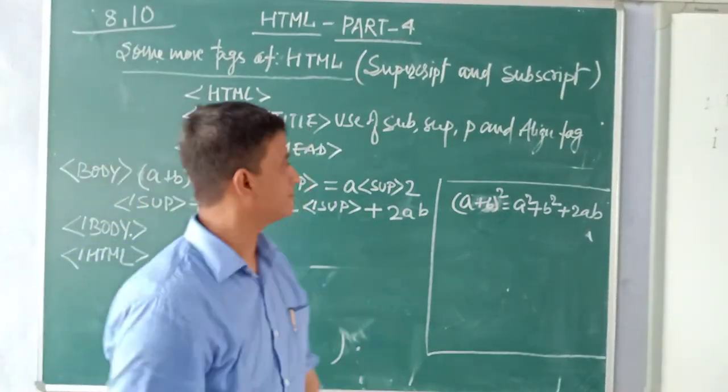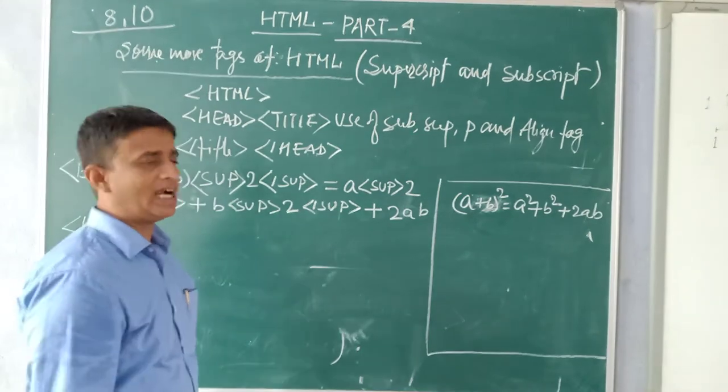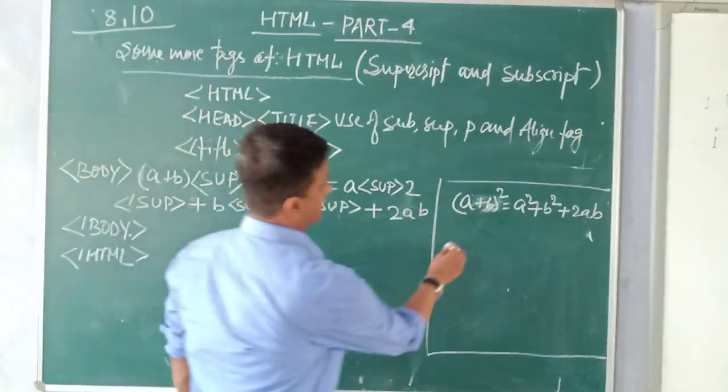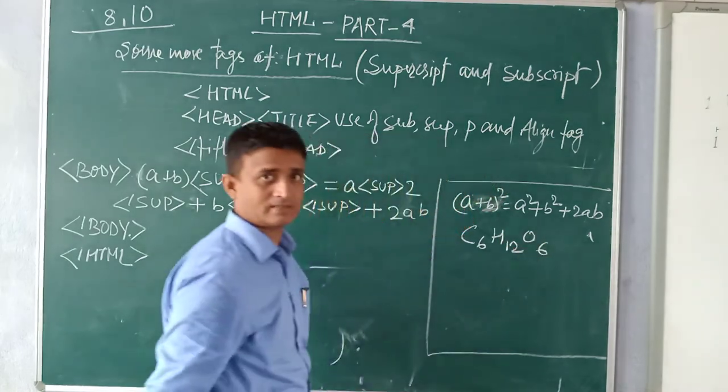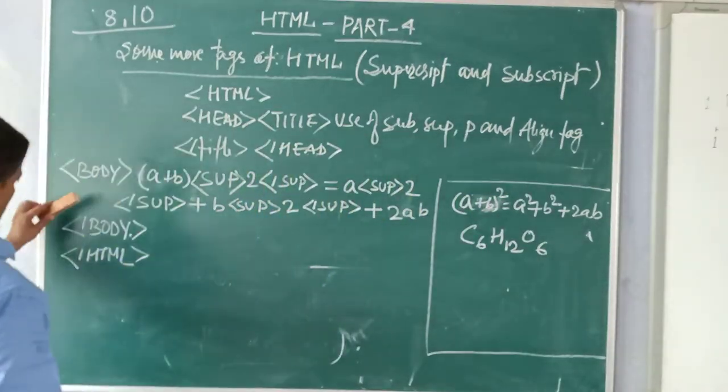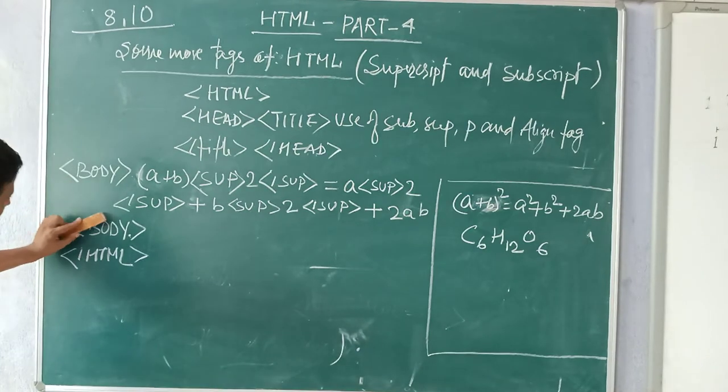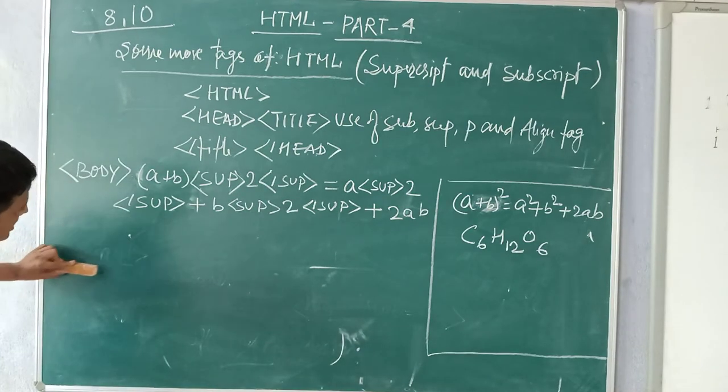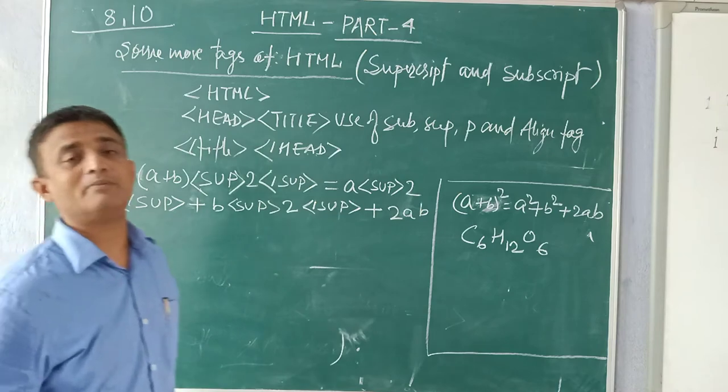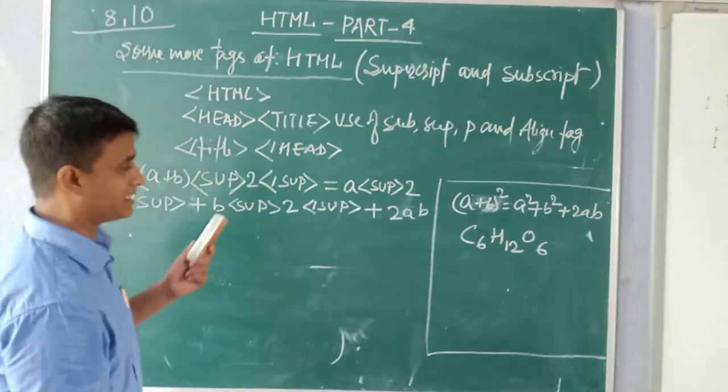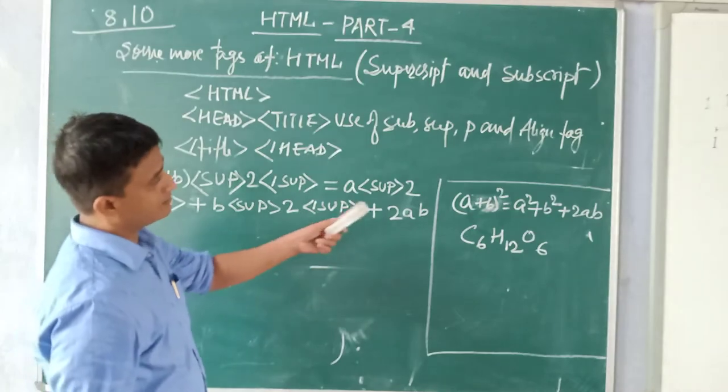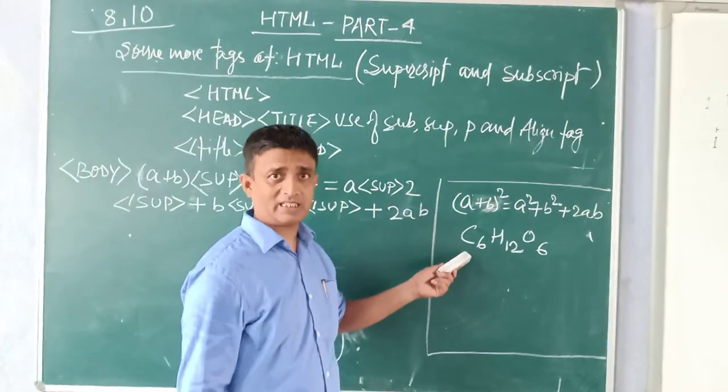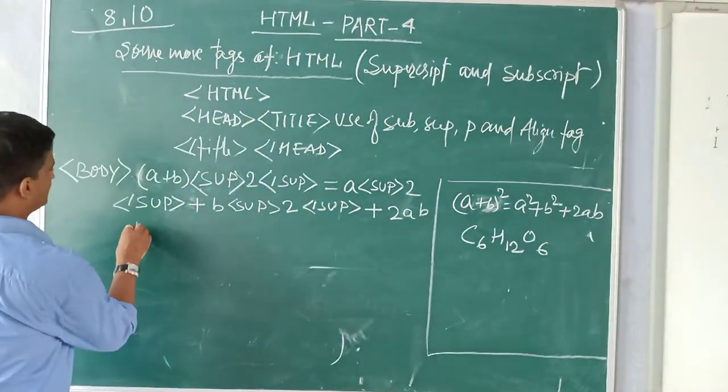Now coming on the second. Second one we have is C6H12O6, glucose. So body - now remove this body again because whatever we have to write we will write in the middle of the body section. So I am going to start writing.